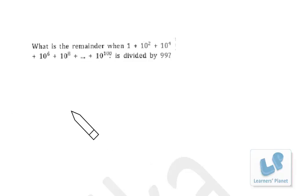Hello friends, let's see this problem based on number system. What is the remainder when 1 plus 10 squared plus 10 to the 4 plus 10 to the 6 plus 10 to the 8, up to 10 to the 100, is divided by 99?